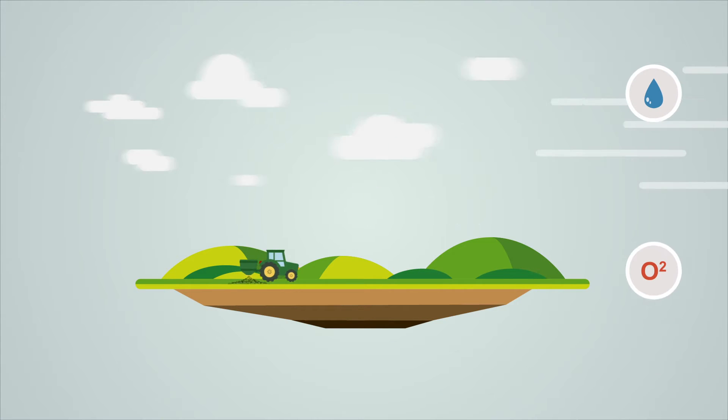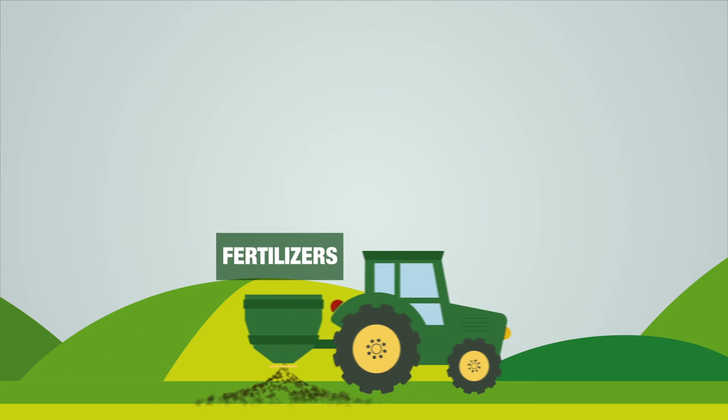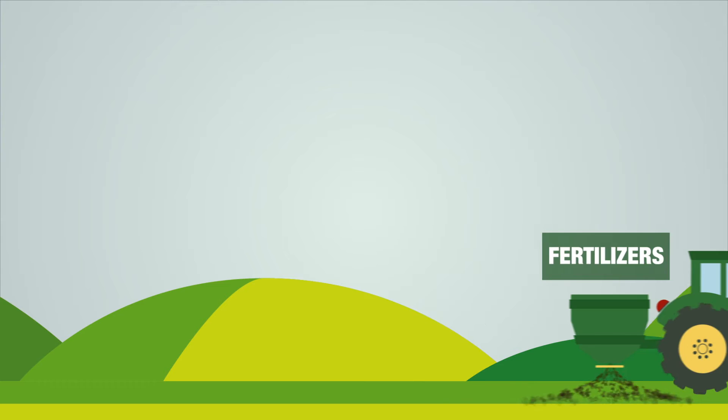Plants need water, oxygen, light, and a healthy soil to grow. But they also need nutrients that are essential to their growth and development.